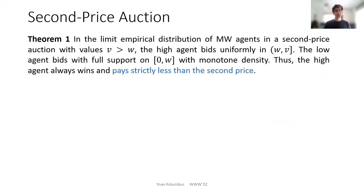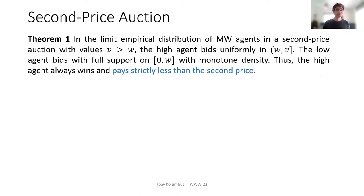Starting with the second price auction, the result says that in the limit empirical distribution of multiplicative weights agents with values V and W, the high agent is going to bid uniformly between the second price and its value. The low agent is going to bid with full support between zero and its value — the second price — with monotone density. So the high agent always wins but pays strictly less than the second price. We are not getting the second price outcome.